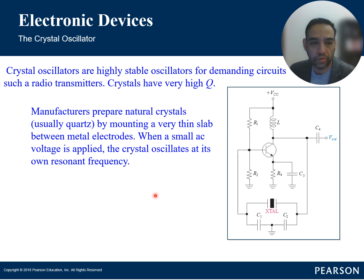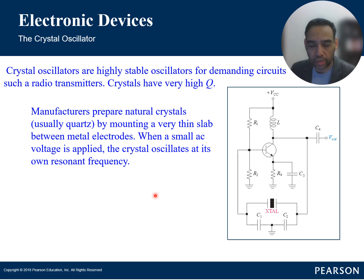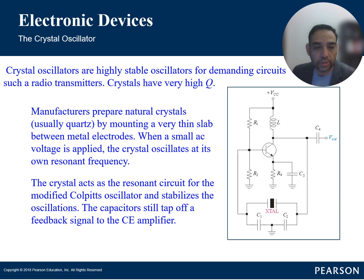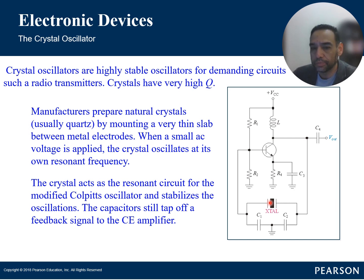Manufacturers prepare thin slabs of natural crystal — usually quartz — mounted with metal electrodes. A small AC voltage causes the material to vibrate at its natural frequency depending on its structure and size. Crystals act as a resonant circuit for a modified Colpitts oscillator and stabilize the oscillations. The capacitors tap off a feedback signal to the amplifier, while the crystal replaces the inductor to stabilize oscillations.